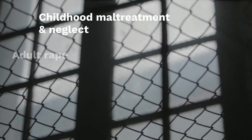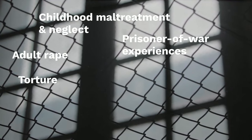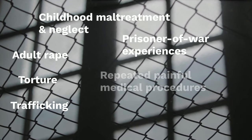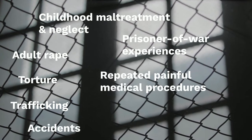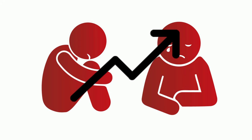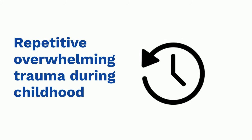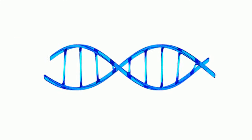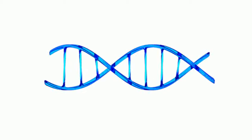Studies have included victims of childhood maltreatment and neglect, adult rape, prisoner of war experiences, torture, trafficking, repeated painful medical procedures, accidents and natural disasters. However, people who have experienced physical and sexual abuse in childhood are at increased risk of dissociative identity disorder. The vast majority of people who develop dissociative disorders have experienced repetitive, overwhelming trauma in childhood. Genetic studies of dissociation also suggest that there is a complex interplay between genetic factors and the type, timing and chronicity of trauma.